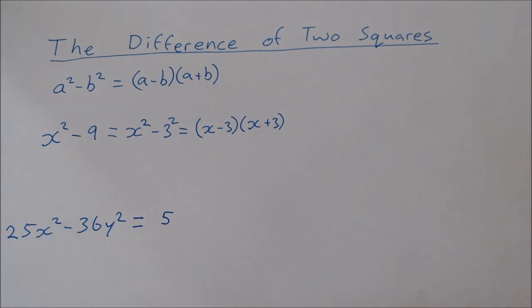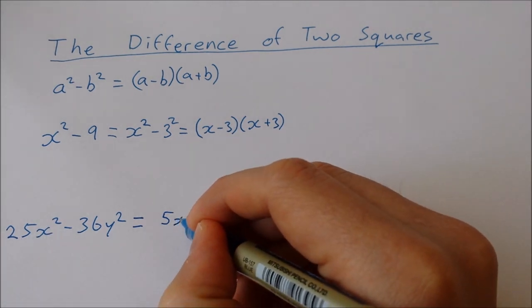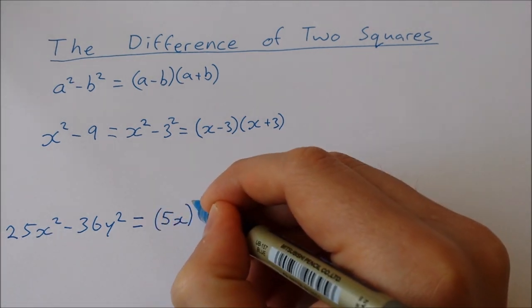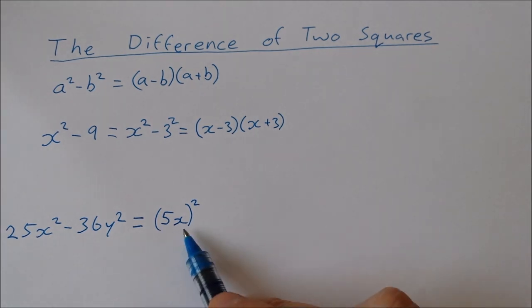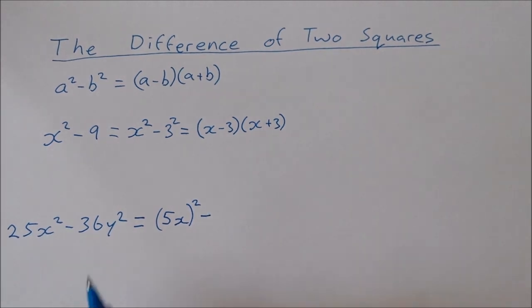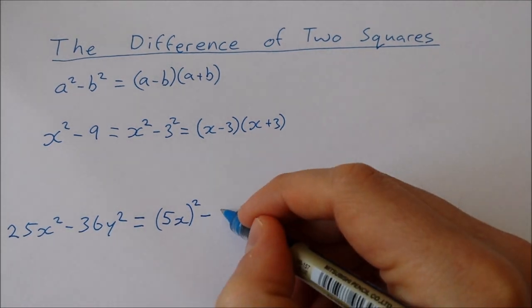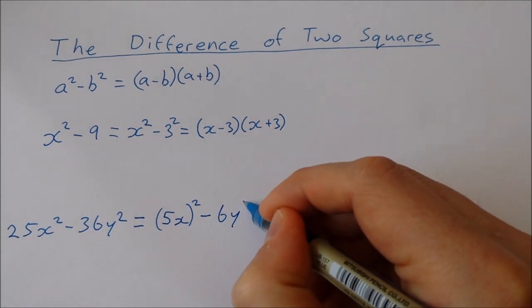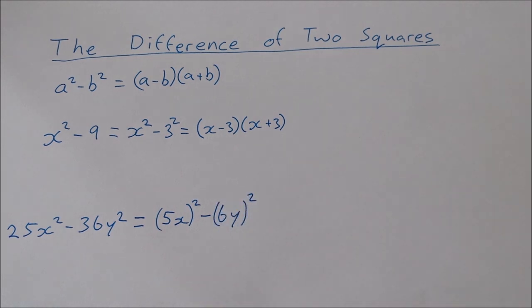So I can write 25x squared as 5x in brackets to be squared, because 5x times 5x is 25x squared. I can write 36y squared as 6y to be squared. So now I have the difference of two squares.